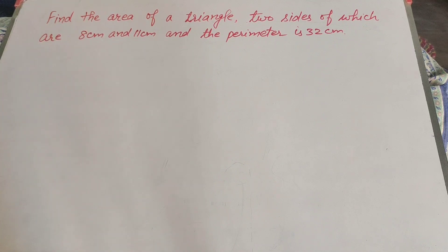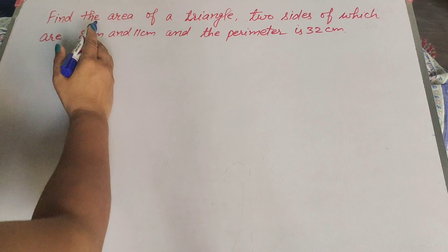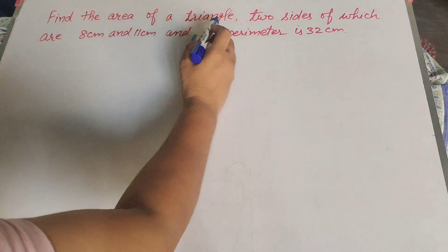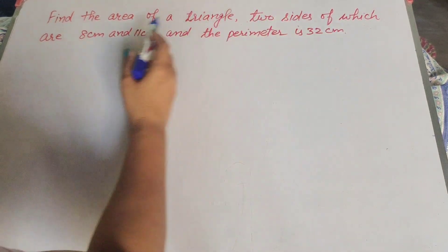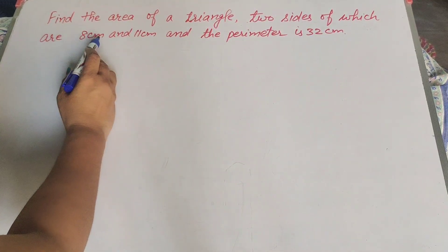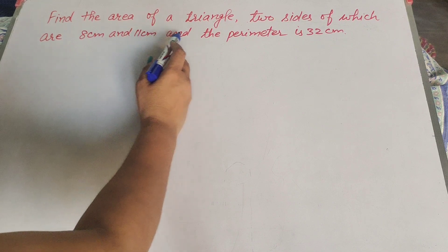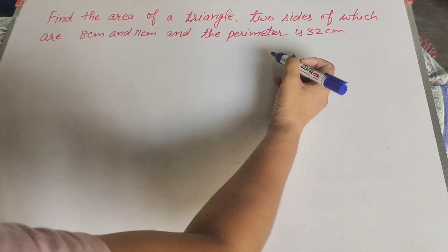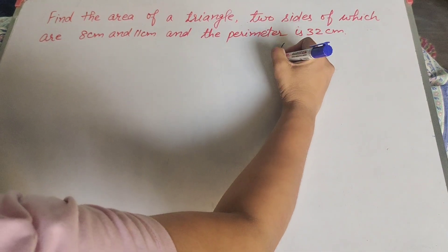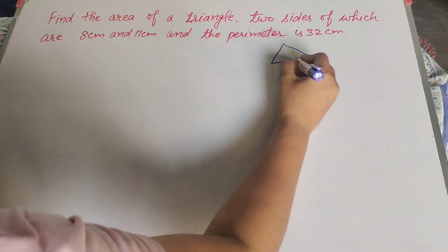Hello friends, welcome to my channel. In this video we find the area of a triangle, two sides of which are 8 centimeters and 11 centimeters, and the perimeter is 32 centimeters.